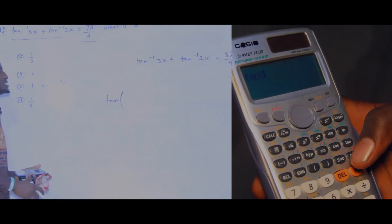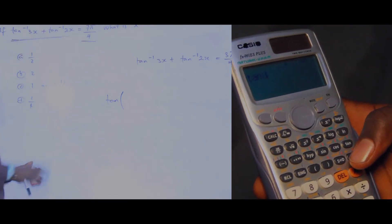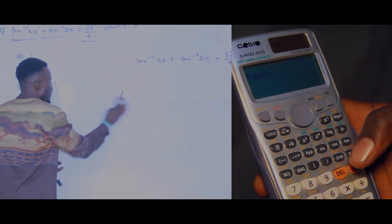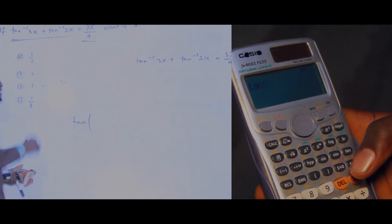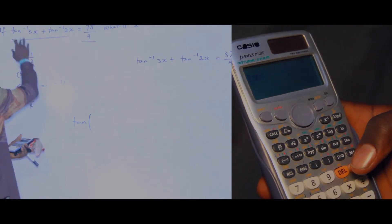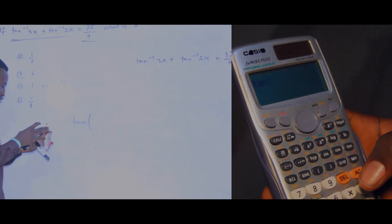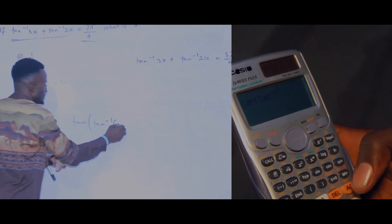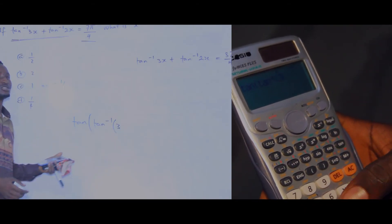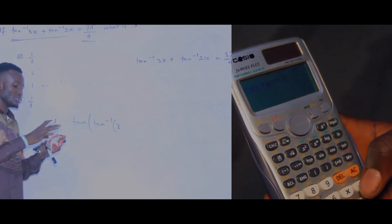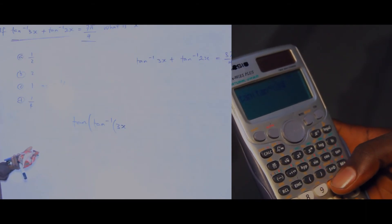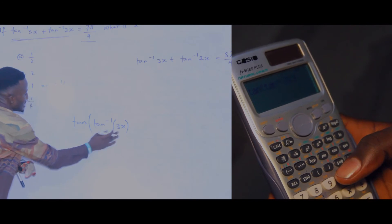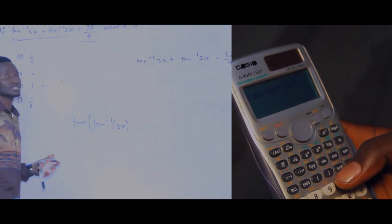When you press tan on your calculator, press it and open the bracket. Now press the whole left side. Press shift tan to get tan inverse, then press 3. Some people ask how to press x — the way to press x is to press alpha and the closed bracket button. If you press alpha and that button you will have x. Then close the bracket for this tan inverse. Then press plus, and for the next term press shift tan again to get tan inverse, open the bracket, press 2, then press alpha and closed bracket for x, then close the bracket.